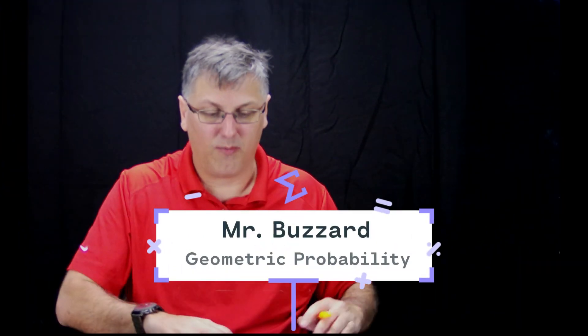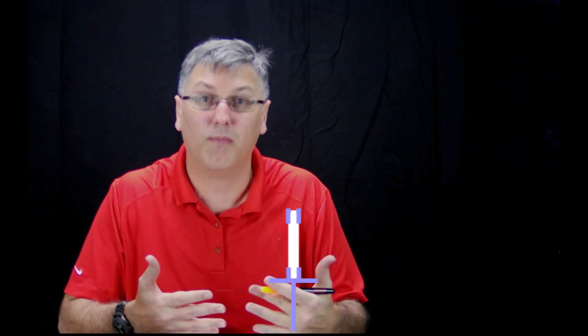All right, the last type of probability I'm going to actually show you is geometric probability. Geometric probability deals with area of shapes.